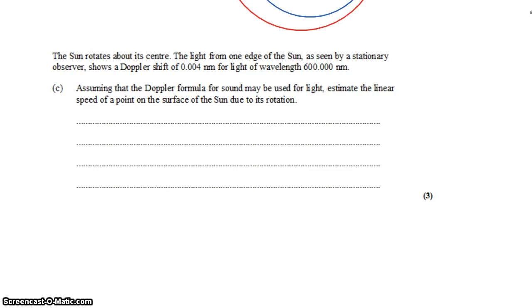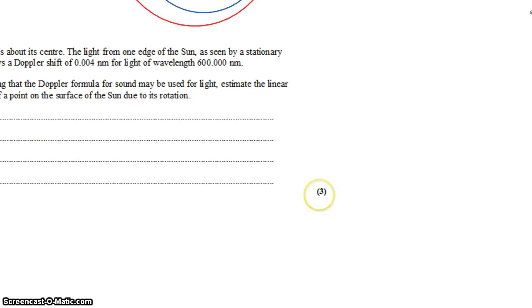The next part says that the sun rotates about its center. And light from one edge of the sun has been seen by a stationary observer, and it shows a Doppler shift of 0.004 nanometers for light which had a wavelength of 600 nanometers, with lots of precision, six significant figures. Assuming that the Doppler formula for sound may be used for light, estimate the linear speed of a point on the surface of the sun due to its rotation. So let's talk briefly about what we're even talking about here.